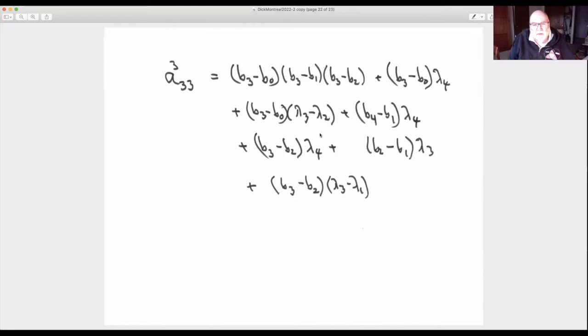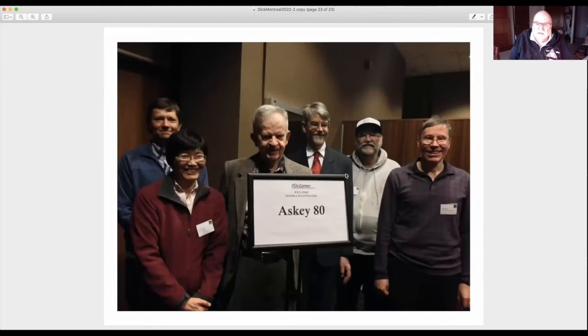For example, here's A_333. You notice here, this has a lot of differences of b's, but if they're increasing, these are all positive. Every term here is positive if the b's and lambdas are increasing and the lambdas are positive. If you were just to write out the answer without these factors like this, it would be not so easy to come up with this. Finally, I want to end with a nice little photo here.